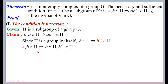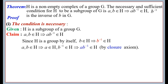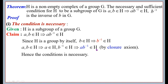This implies a ∈ H. Since b ∈ H implies b⁻¹ ∈ H, we can write b⁻¹ ∈ H. By the closure axiom, a·b⁻¹ ∈ H. Thus, a, b ∈ H implies ab⁻¹ ∈ H. Hence the condition is necessary.